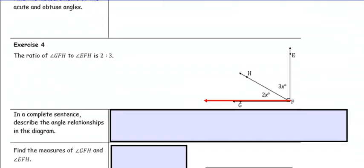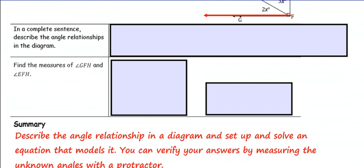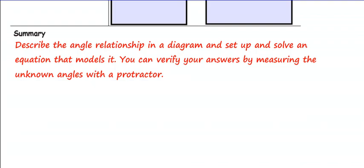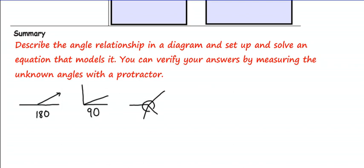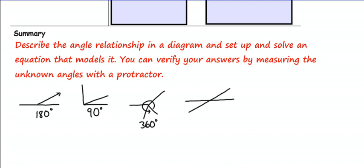We're going to skip Example 4 and go to the summary. In this lesson, you learned to describe angle relationships in a diagram and set up and solve an equation that models it, verifying answers with a protractor. Angles on a line sum to 180 degrees; angles forming a right angle sum to 90 degrees; angles at a point sum to 360 degrees. Vertical angles are equal in measure, formed by two intersecting lines, and are congruent.